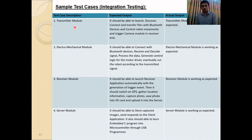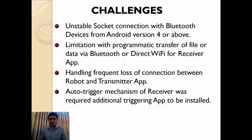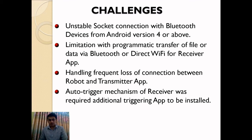We tested the functionalities of all four modules as integration testing. Moving to conclusion: one major challenge was unstable socket connection with Bluetooth devices from Android version 4 and above, so additional mechanisms are required to handle that issue. The receiver Android app was kept in auto mode, so limitation with programmatic transfer of files or data via Bluetooth or direct Wi-Fi was a big challenge. To handle frequent loss of connection between robot and transmitter app, a thread with runnable interface was used. Auto-triggering mechanism for the receiver app was another challenge.